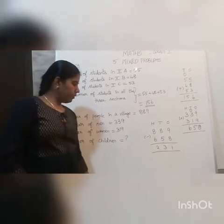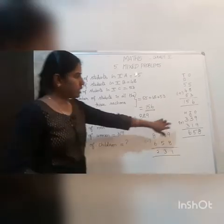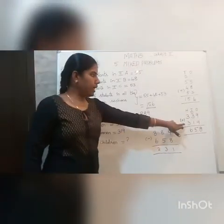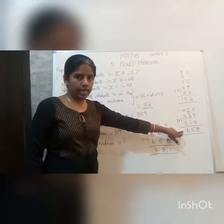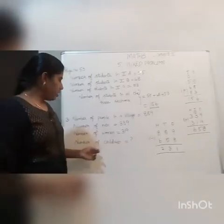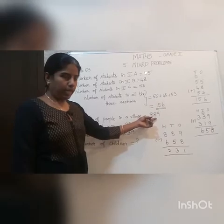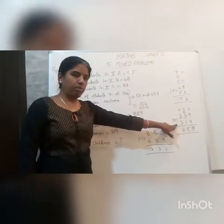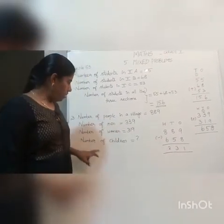What we need to do first is add up the number of men and women. Number of men is 339 and number of women is 319. In the first step we add these two numbers to get 658. This is the total number of men and women together. They have asked us to find the number of children, so we need to subtract the total of men and women from the total number of people in the village.